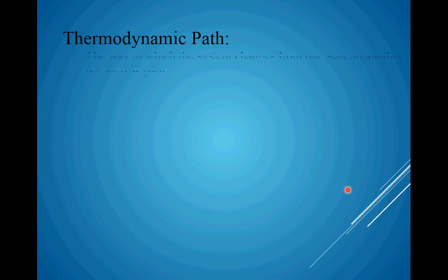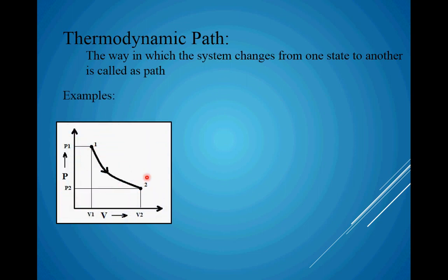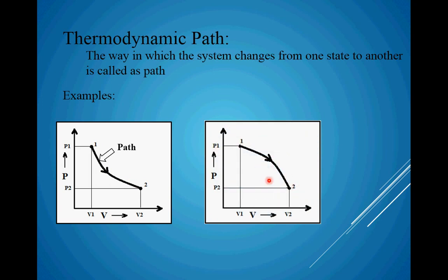Now, thermodynamic path. What is thermodynamic path? As per definition, the way in which a system changes from one state to another is called a path. On a PV diagram, state 1 is changing to state 2, and the line indicates the way the system travels from state 1 to state 2 — that way is called the path. It is not mandatory to have only a single path for any process. The same states 1 and 2 can be connected by a second, different path. The way used to represent the change of state is called the path.